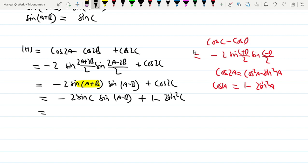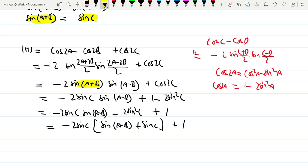So we have -2sin(c)sin(a-b) - 2sin²c + 1. Now -2sin(c) is common, so factoring it out gives -2sin(c)[sin(a-b) + sin(c)] + 1. Since sin(c) = sin(a+b), we can substitute.